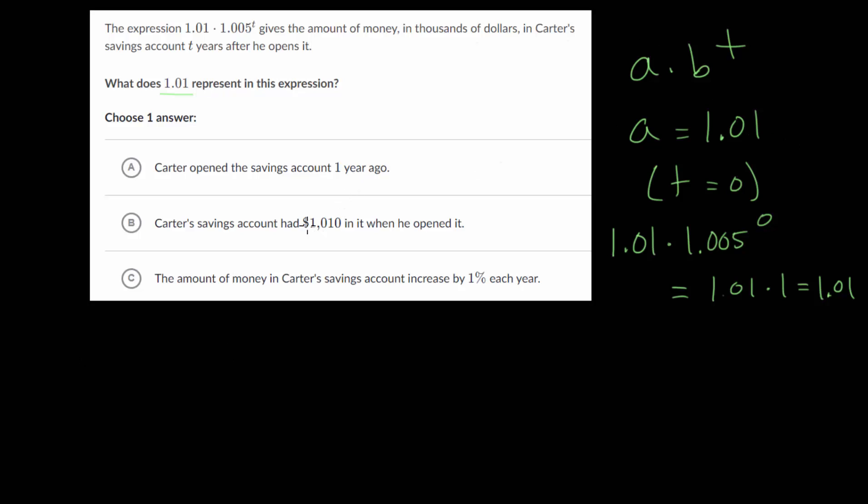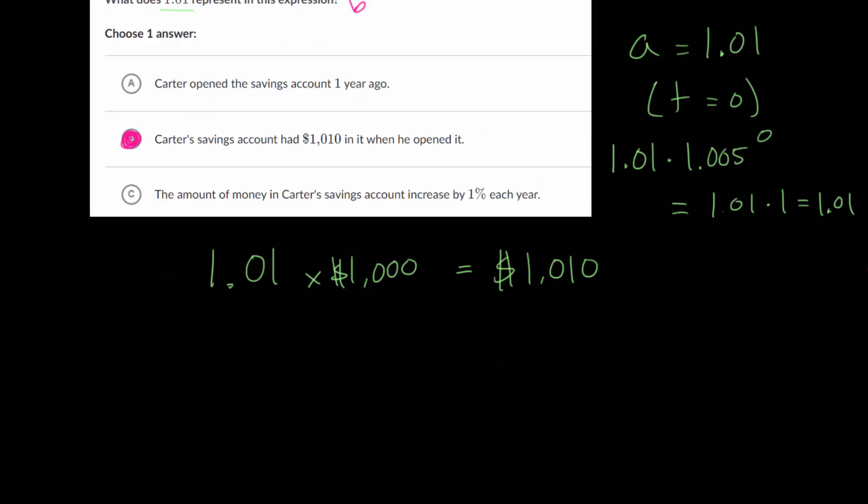So that would be 1,010 dollars. You can plug that into your calculator just to get the units right, but this would be 1,010 dollars. So that is the starting amount in the savings account, and you can see that's going to be choice letter B, Carter's savings account had 1,010 dollars in it when he opened it. And of course, if we were asked about the growth rate, or what we're multiplying by every year, or what percent we're increasing by every year, that would be dealing with B in this case. So that 1.005, that's B from our general formula, that's our growth rate. Let's do one more problem.